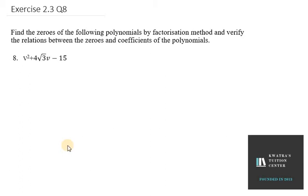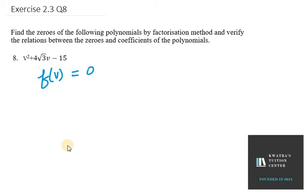Let's start with question number 8. Here we are given f(v) = v² + 4√3·v - 15, and we need to equate it equal to zero: v² + 4√3·v - 15 = 0.